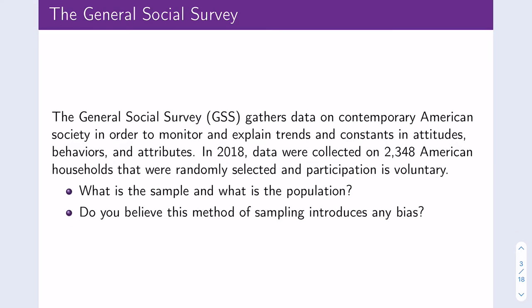Let's begin with an example from the General Social Survey. The General Social Survey gathers data on contemporary American society in order to monitor and explain trends and constants in attitudes, behaviors, and attributes. In 2018, data were collected on 2,348 American households. They were randomly selected, and participation is voluntary.